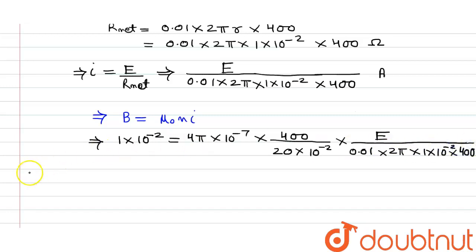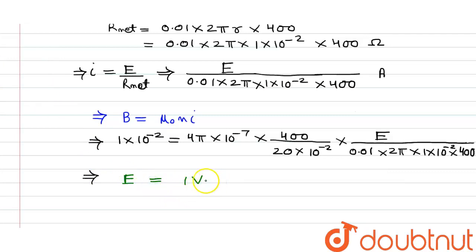After solving this, we get our final value of the voltage of the battery: the voltage of the battery is 1 volt. So if we apply a 1 volt battery across the solenoid, it will generate a magnetic field of 1 × 10⁻² tesla. This is our final answer.